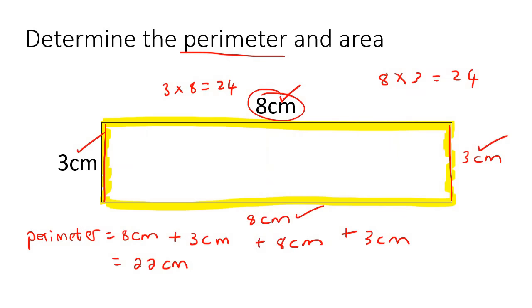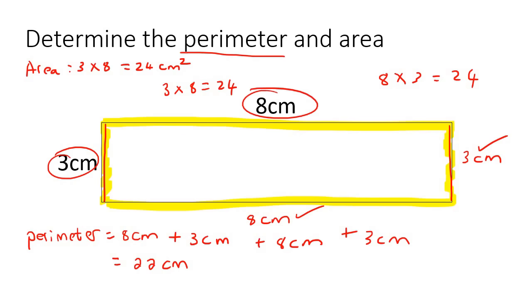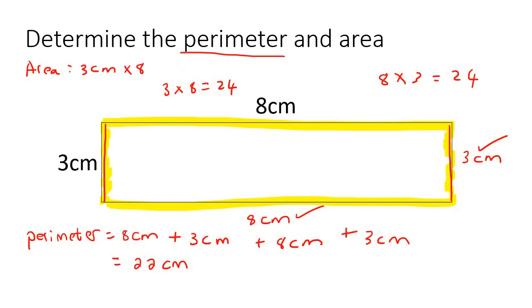A faster way to do it for a rectangle is just to multiply these two lengths — three multiplied by eight. So the area is just three multiplied by eight, and that would be 24 centimeters squared. You say to the power of two because you could think of it like this: three centimeters multiplied by eight centimeters is 24, and centimeters times centimeters gives you centimeters to the power of two.